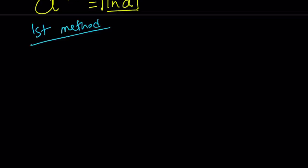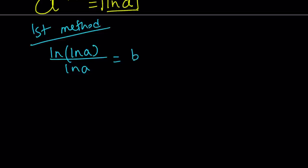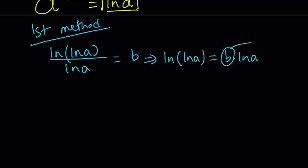My first method again uses substitution, but it's a little different. Instead of calling ln a x, I'm going to call the whole thing something. I'm going to set ln ln a over ln a equal to b. From here, if you cross multiply, you're going to get ln ln a equals b times ln a.